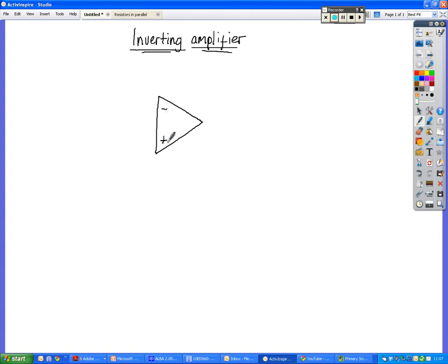It's got a negative and a positive input. It's how the resistors are arranged around that that tells you what type of amplifier it is. So in an inverting amplifier you have a resistor, which we will call R1, connected to the negative terminal. Now the negative terminal we can also refer to as the inverting terminal. So that's where the inverting amplifier comes from.